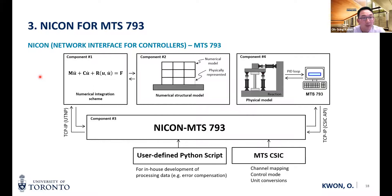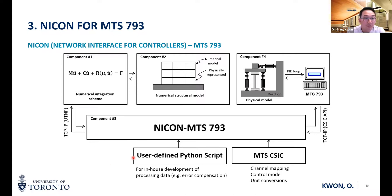Recently, we have collaborated with MTS such that we can directly communicate with MTS 793 software through an interface program, NICOM MTS-793. By allowing direct data communication between NICOM MTS-793 and MTS 793, we can eliminate the analog I/O interface. This allows us to transfer data more accurately without worrying about noise, and configuration of the experiment is much simpler. In NICOM MTS-793, user-defined Python scripts can be used for in-house development and processing of data such as error compensation schemes, and MTS CSIC software is used to map channels and define control modes.